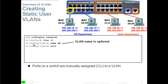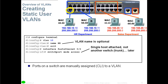In VLAN configuration mode you can type 'name' followed by a label — for example, 'name HR' — to identify what VLAN 10 is. This is optional. Then go to the physical port, for example 'interface FastEthernet 0/2', and type 'switchport mode access'. This tells the switch that the device connected to this port is an end device and will not need trunking, which we'll cover in an upcoming video.